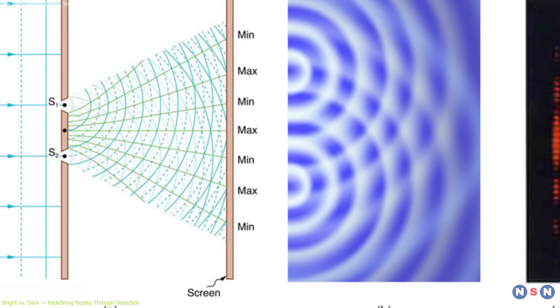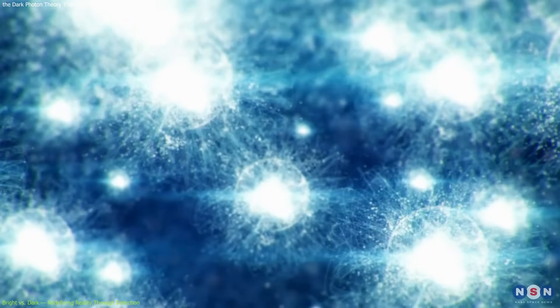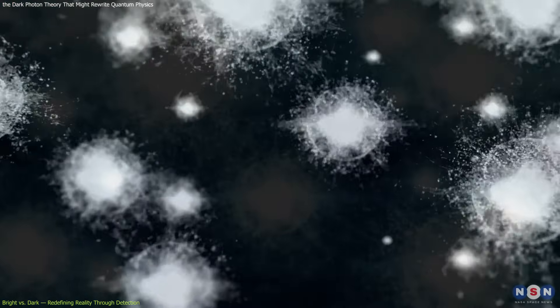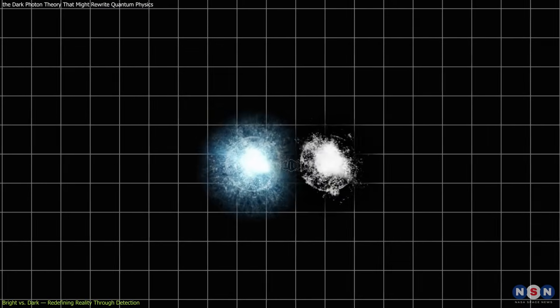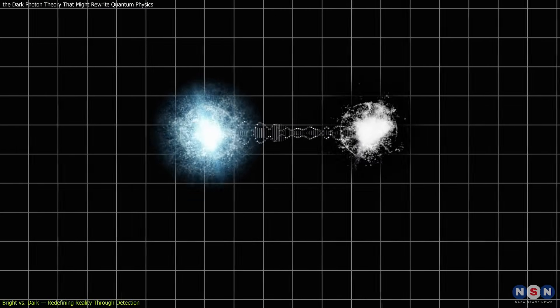This flips the measurement process on its head. In the conventional view, detecting which slit a photon passes through collapses the wave function and erases interference. But in this new model, it's not about destroying a wave. It's about toggling between detectable and undetectable photon states. Measurement shifts the photon's coupling, not its trajectory.